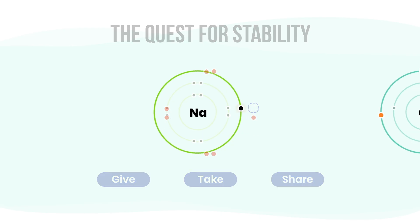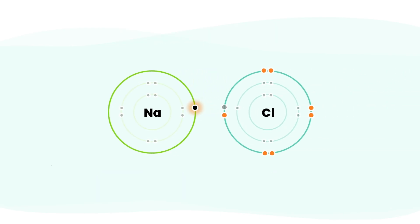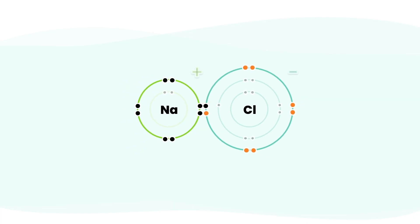Some atoms like chlorine need just one electron to feel complete. Others like sodium have one to spare. So sodium gives it up, chlorine takes it, and they bond. Just like that, they become something entirely new - table salt.